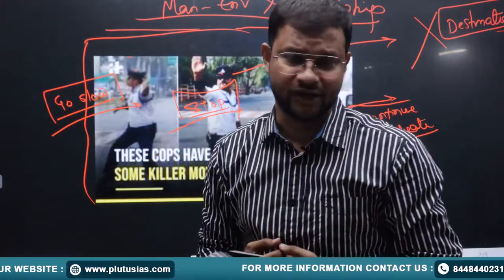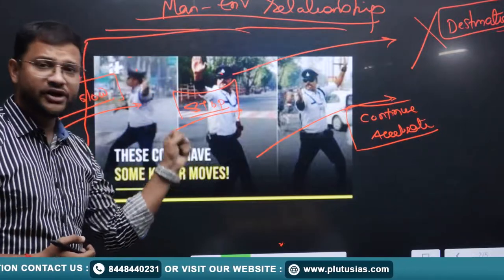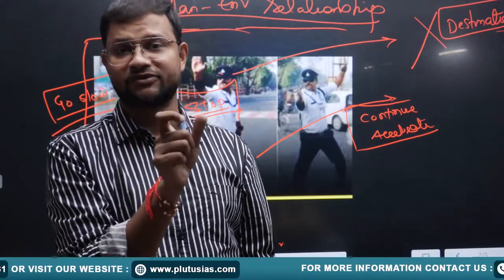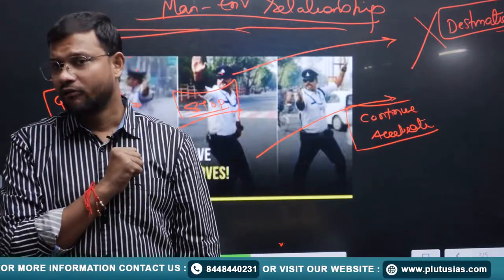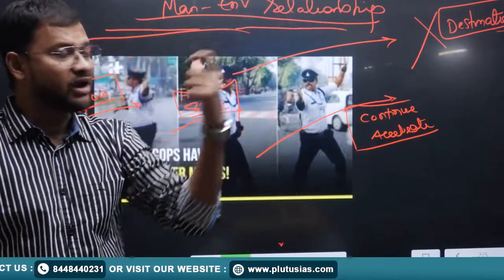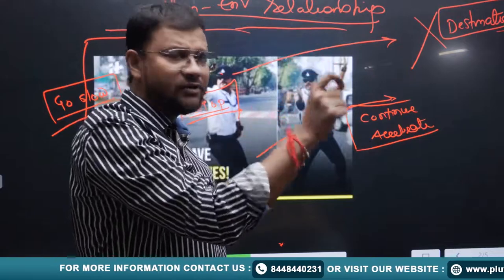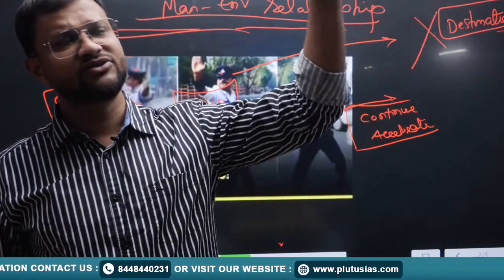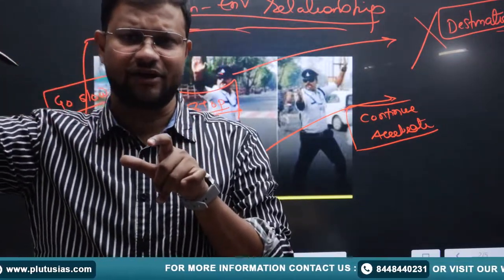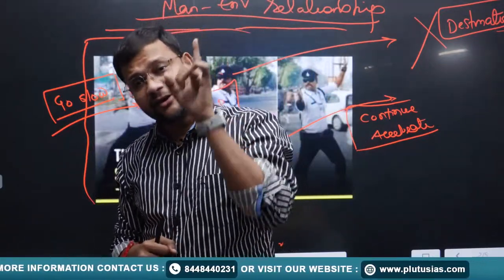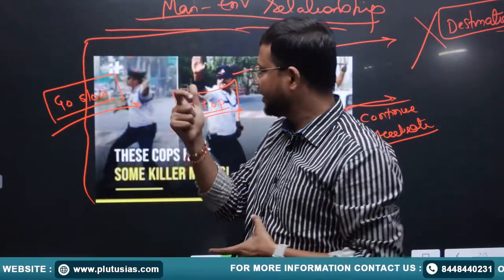Now you must be asking why we discussed the traffic controller when we are supposed to discuss neo-determinism. Neo-determinism has a very relatable behavior between man and environment. According to Griffith Taylor, the driver or rider represents the environment, which has a determined target — ensuring the development of the earth in a particular fashion, whether through industrial growth, population rise, or science and technology.